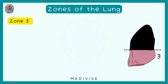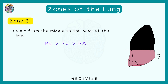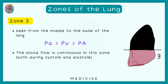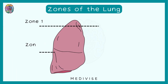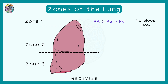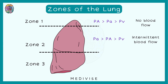Zone 3 is seen from the middle to the base of the lung. Here, arterial pressure is greater than venous pressure, which is greater than alveolar pressure — so vessel pressure exceeds alveolar pressure and blood flow is continuous, both during systole and diastole. In summary: zone 1 has maximum alveolar pressure and no blood flow; zone 2 has intermittent blood flow; and zone 3 has the least alveolar pressure and continuous blood flow.